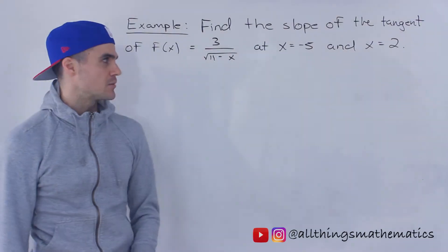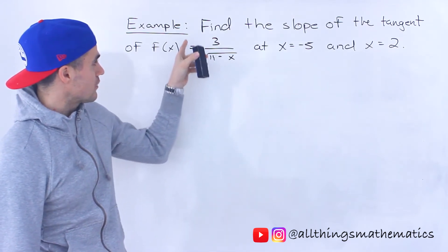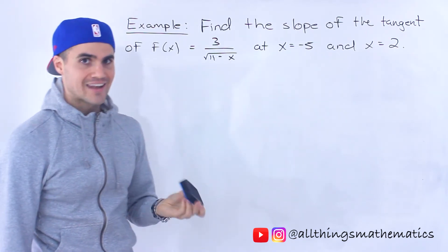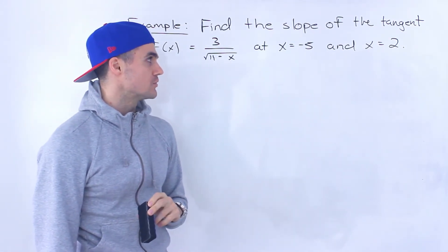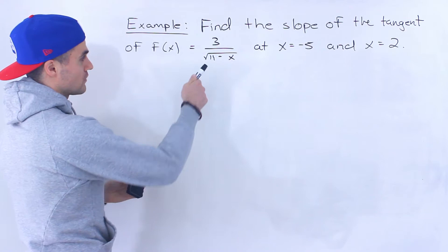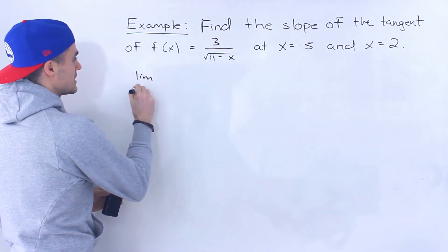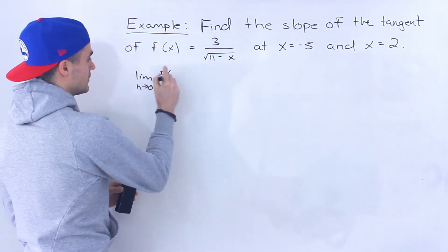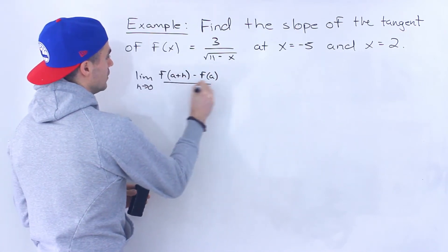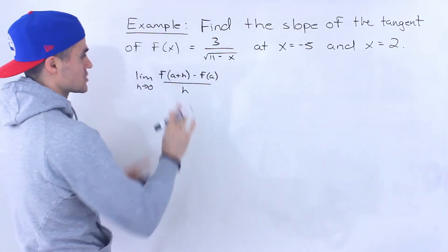Welcome back. Moving on to the next question, we have to find the slope of the tangent of this function — 3 over the square root of 11 minus x — at an x value of negative 5 and at an x value of 2. Like previous examples, let's find a general expression for the slope of the tangent at any x value using the difference quotient: the limit as h approaches 0 of f(a+h) minus f(a), all over h.